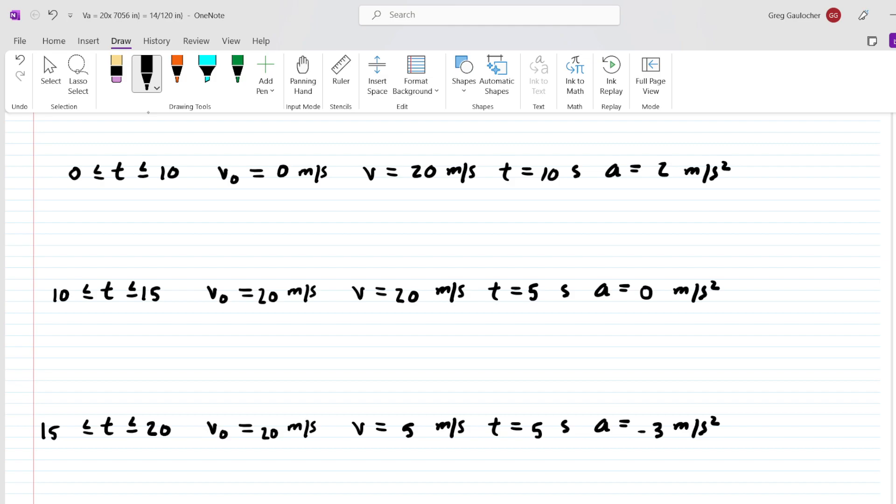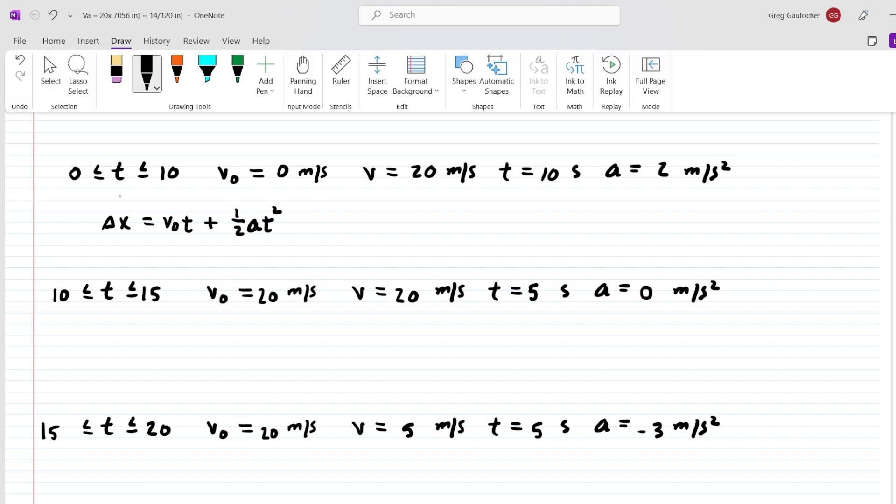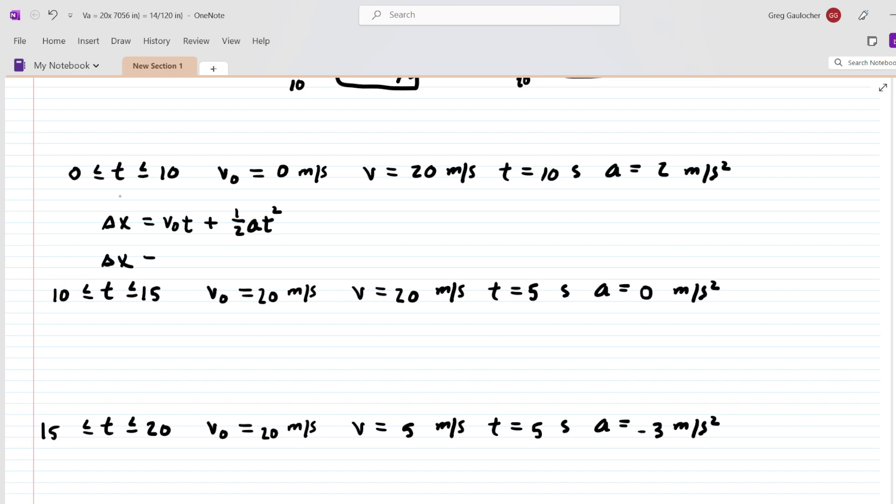To calculate that distance, we'll use the following equation from one-dimensional motion. We'll do the first calculation together, and then you'll do the other two on your own. For the initial velocity, plug in zero. The time interval for that first segment was 10 seconds, and then we have one-half times the acceleration times the time squared. Don't forget to square that time. When you work that out, you're going to get a value of 100 meters. That is the distance traveled for the first time interval.